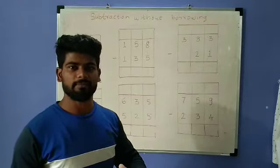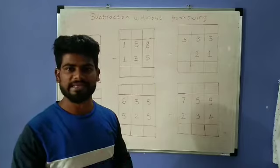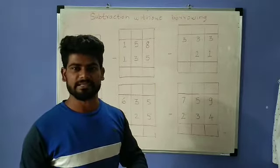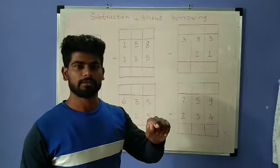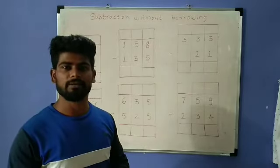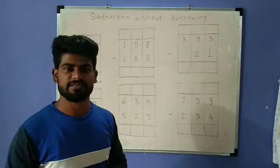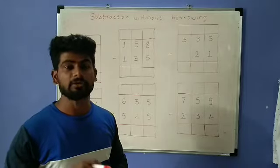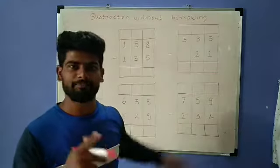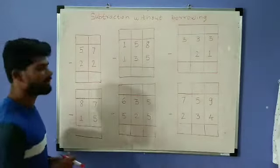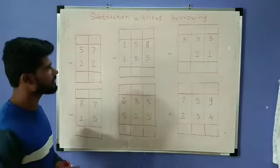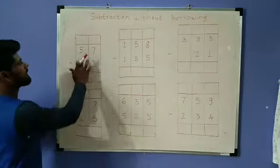First, one important thing to remember: we subtract a smaller number from a bigger number. From a bigger number, we subtract a smaller number. We do not subtract a bigger number from a smaller number. Why we don't do that, I will explain when we cover subtraction with borrowing. Now let's see on the board.